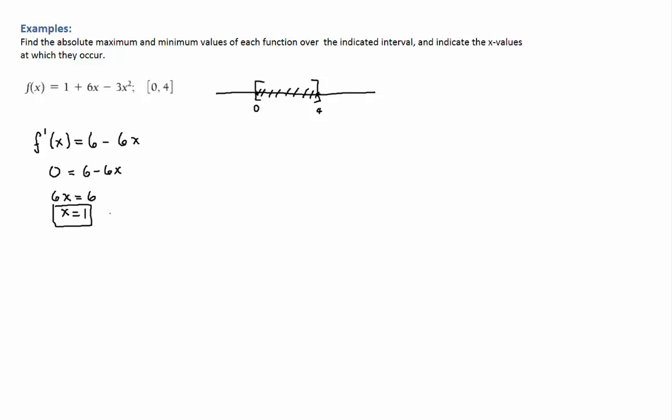So you have your critical number here. This is a candidate for it to be an absolute max or an absolute min. Now you would also have to find those values of x where the derivative is undefined, however there's none of those because the function again is a polynomial, so it's defined everywhere.